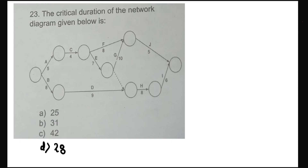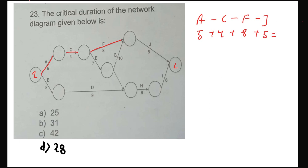Question 22 — this question is not done yet. Critical duration is the longest duration. We need to evaluate paths: A to C, C to F through F, and A to C. Then path A to C, C to E, and A to E select G through J. Adding 5 plus 4 plus 8 plus 5 to get the critical path duration.